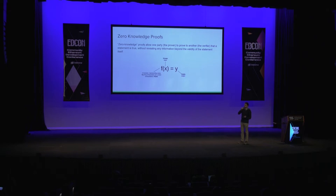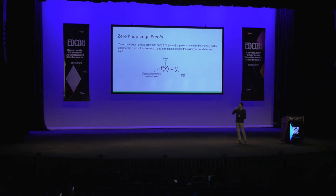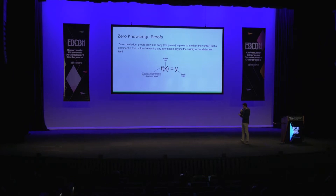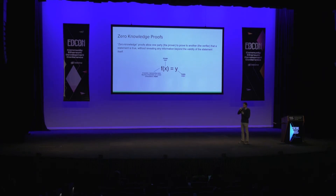Let's deep dive into how it works. How many of you are familiar with zero-knowledge proofs? Not so many — okay, I'm going to explain. Zero-knowledge proofs are a cryptographic protocol which allows you to convince a verifier that you have completed some computation. The computation is publicly known — we call it a circuit. This function is publicly known to both parties. You have some private input which you're not disclosing, and some public input which both parties know. You can then provide a short proof which convinces that you performed the computation correctly without disclosing the private input.